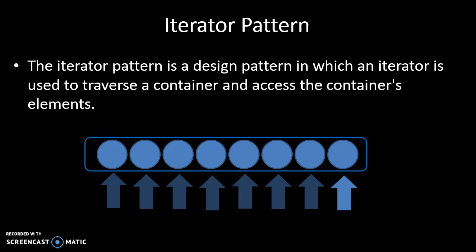For some structures there's an easy way to know where it starts and finishes. For an array, it's the first element to the last element. Whereas for sets, there's no particular ordering. Even for a collection of objects, there's no order we can easily access. So the iterator pattern creates an approach to allow us to visit each element, one after the other.